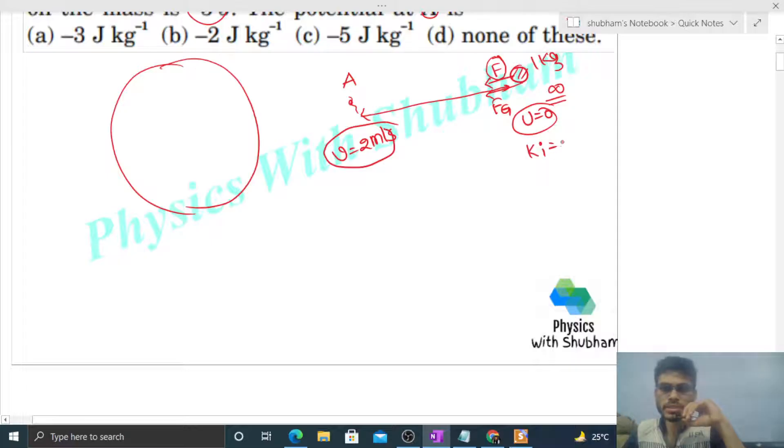Because we already know the initial kinetic energy of the body is zero, and final kinetic energy of this body is half of mass into speed squared, so that is 2 joules. Work done by all the forces, that is work done by this external force plus work done by this gravitational force of attraction, equals change in kinetic energy.